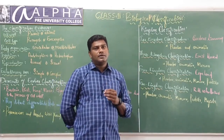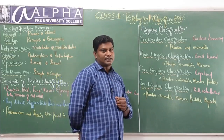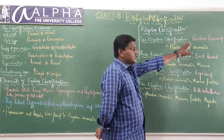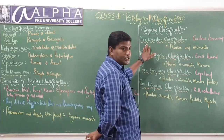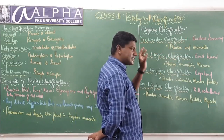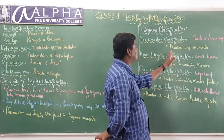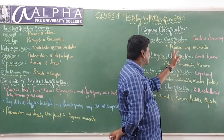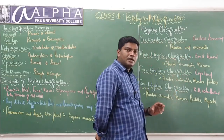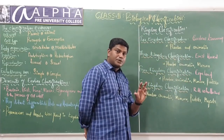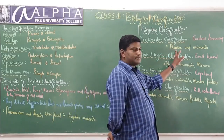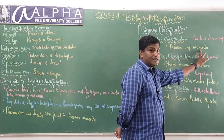The first formal classification of the world was Carolus Linnaeus, who proposed the two kingdom system of classification. He classified all living organisms into two kingdoms: Kingdom Plantae and Kingdom Animalia.